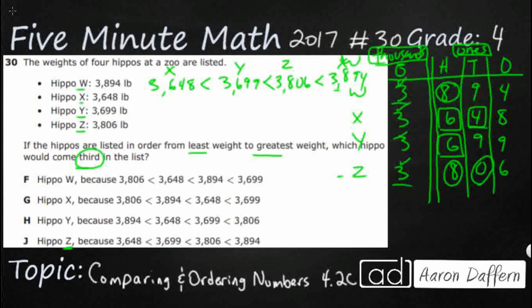So what we are looking for is Hippo Z, and it looks like they've got everything in order just like we do, which is good. So our answer here is going to be J.